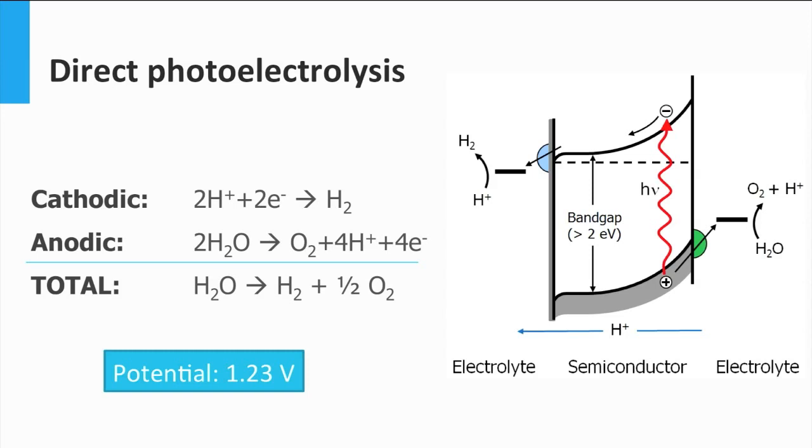Each half reaction has a potential associated and the sum of the potential of each half reaction gives us the potential for the whole redox reaction. But potentials are always defined with respect of a reference, a zero that we define. For redox reactions, the zero is defined as the hydrogen half reaction. So in the case of water splitting, the oxygen production reaction has a potential of 1.23 volts with respect to the hydrogen reaction. And therefore the overall potential needed for the reaction to happen will be 1.23 volts.